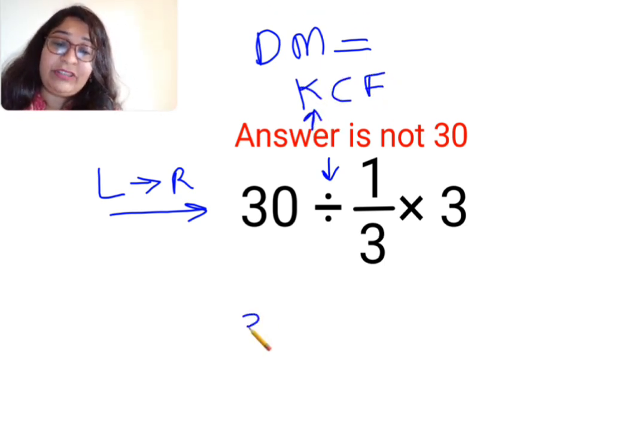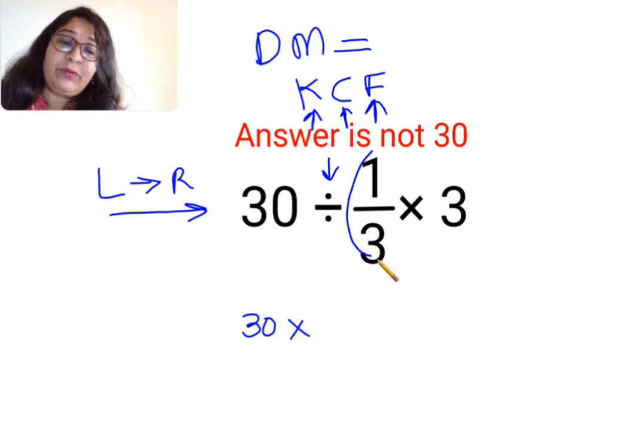Where K stands for keeping the first number as it is. C stands for changing the division sign to multiplication. F stands for flipping or taking reciprocal of 1 upon 3 which is 3 and multiplied by 3. So this is 30 multiplied by 3 is 90 multiplied by 3.